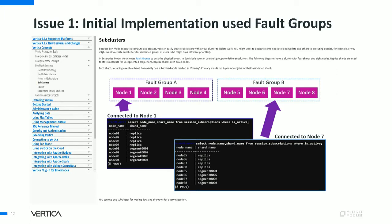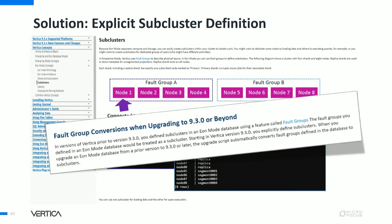In the next slides I'll highlight some issues with workload isolation in the initial Eon release and show how we resolved them. First issue: when we initially released our first subcluster mode, it was implemented using fault groups. While fault groups and subclusters have something in common — they are both defined as a set of nodes — they are very different in all other ways, which was very confusing. As of version 9.3.0, we decided to detach subcluster definition from fault groups, enabling us to further extend subcluster capabilities. Fault groups in pre-9.3 versions are converted into subclusters during upgrade.